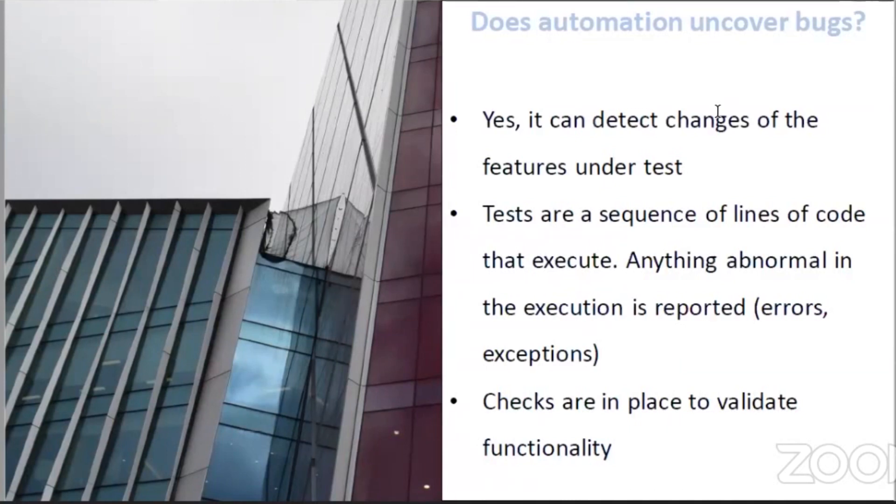It will only report on what you told it to report on. So the checks that you put in place will tell you if something is not working anymore in your own test, not in anything else for which you are not testing. It cannot detect anything around it because it doesn't have some kind of intelligence to tell you something else is not working.